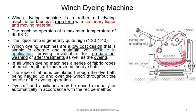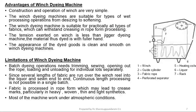Winch Dyeing Machine is a rather old dyeing machine for fabrics in rope form where stationary liquor and moving material takes place. The machine operates at a maximum temperature of 95 to 98 degrees Celsius. The liquor ratio maintained is 1 to 20 to 1 to 40. It is a low-cost design applicable not only for dyeing, but also for washing treatments and after-treatments. Dye stuff and auxiliaries may be dosed manually or automatically.